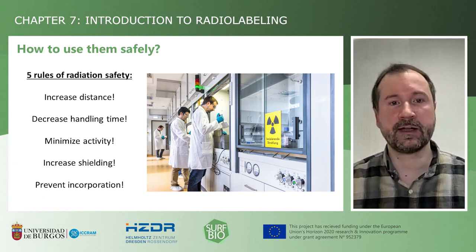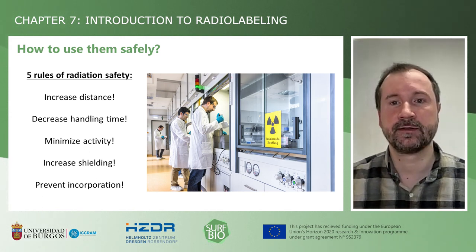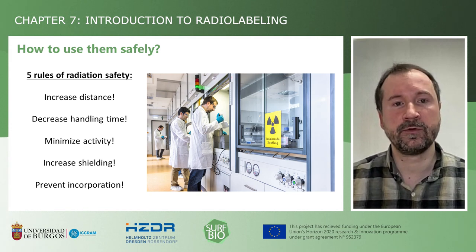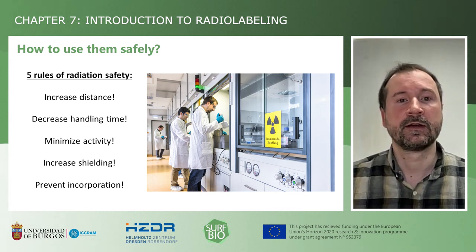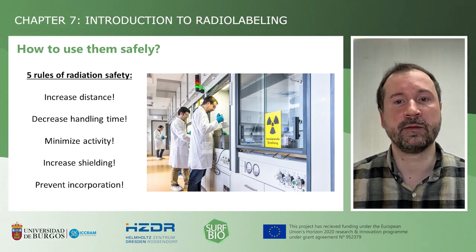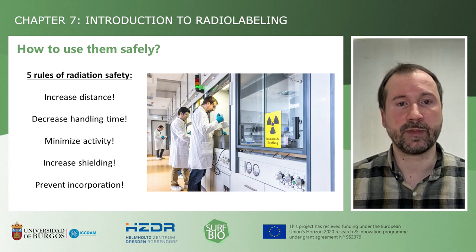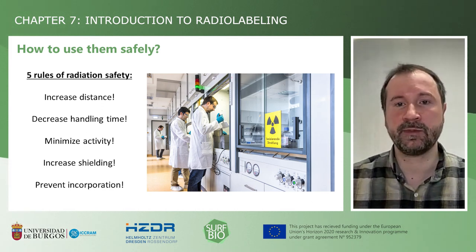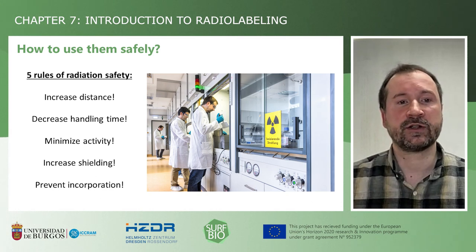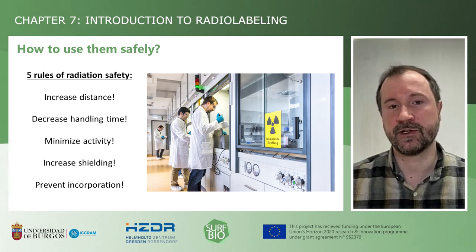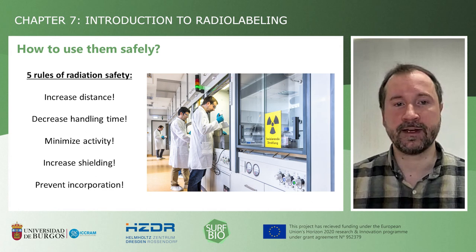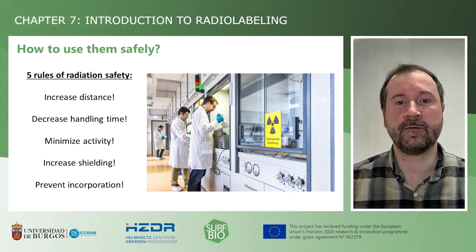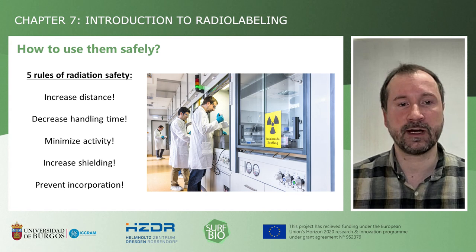Of course, using radioactive materials comes with some safety precautions. However, when following these basic rules, you can perform radiotracing experiments safely in a controlled lab zone. The rules are: keeping of distance, the minimization of the handling time and amount of radioactive material, the use of proper shielding — you can see the lead shielding in the lab image on the right — and the prevention of incorporation of the radiotracers, which is to say to follow proper chemistry lab conduct. Typically, actual radiotracing experiments will take place at very low activities that can be easily conducted in a safe way.